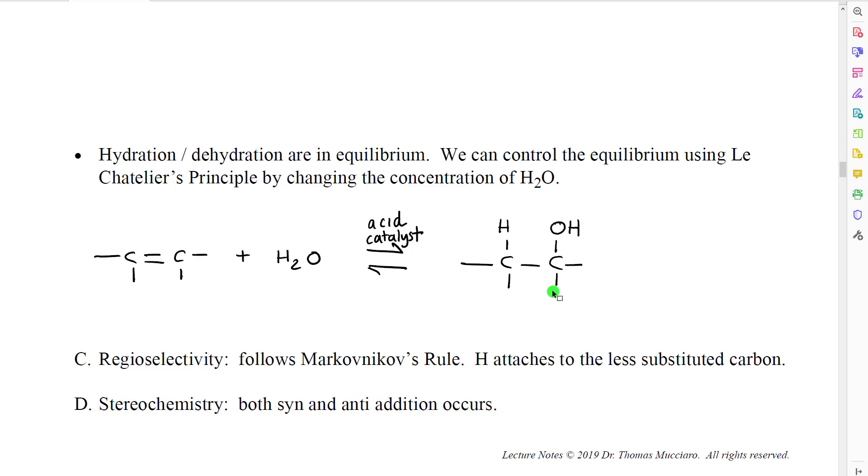In contrast, in dehydration, what we do is we start with the alcohol and the acid and a low concentration of water, and the reaction shifts to the left to try to produce more water. This is a practical application of Le Chatelier's principle. Organic chemists use this kind of principle very often in controlling their reactions. It gives them a great deal of flexibility so that we can either produce an alcohol or convert an alcohol into an alkene as needed.